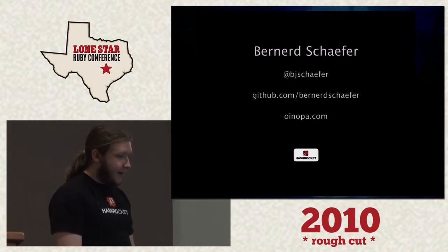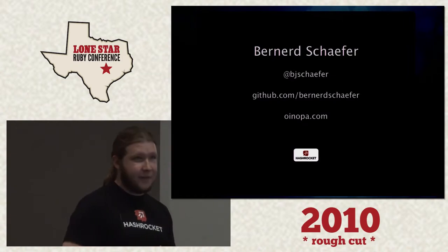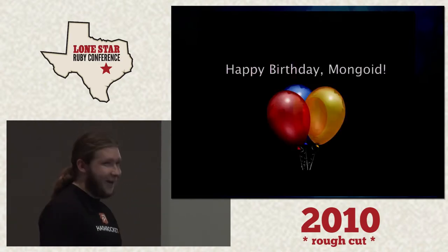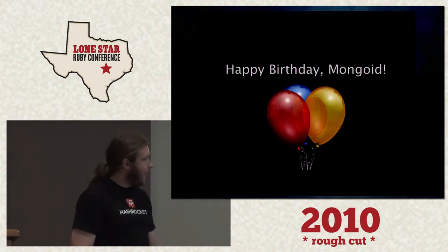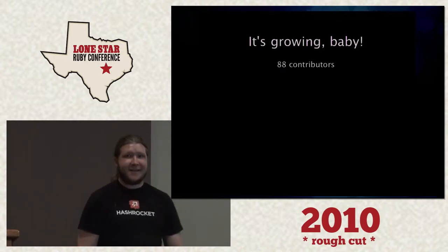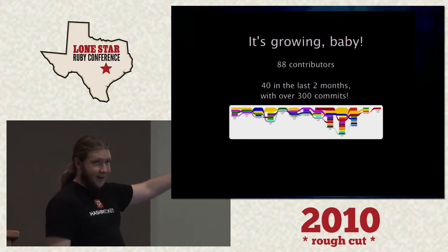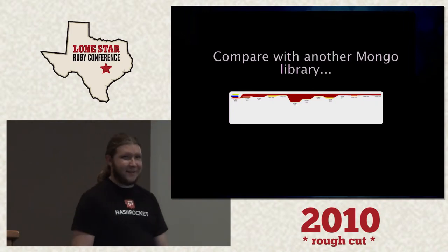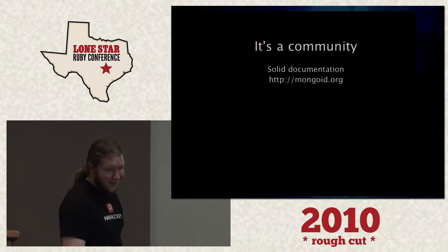We're going to talk about Mongoid, and in particular I want to talk about how we've come to embrace Rails 3 and how Mongoid has all along really embraced Mongo itself. But first, I want to wish Mongoid a happy birthday — it was exactly one year ago today that Duren pushed the first commit for Mongoid. It's been growing like crazy: we've had 88 contributors, 40 contributors in the last two months with 300 commits. That's the impact graph on GitHub. If you look at another Mongo library, that's their impact graph — so there's a real community behind Mongoid.